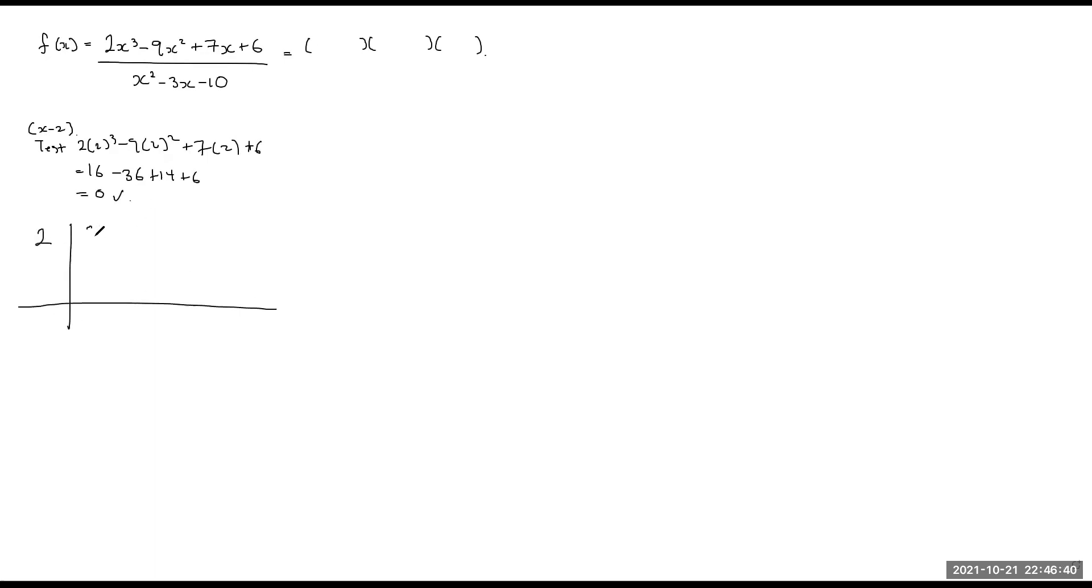So I'm going to go ahead using synthetic, put a 2 here, 2, negative 9, 7, 6. Drop it down, multiply, add, multiply, add, and multiply, and that's a 0.